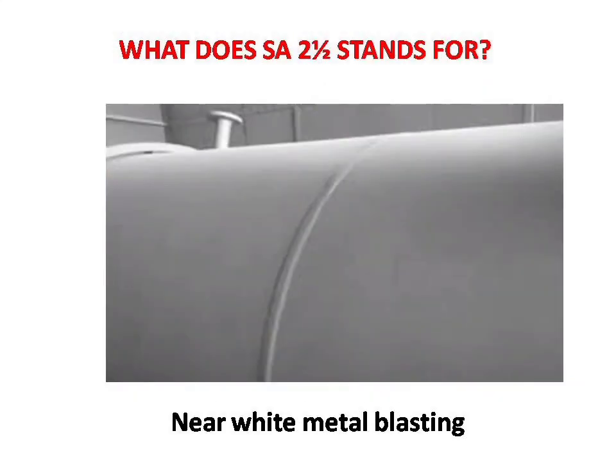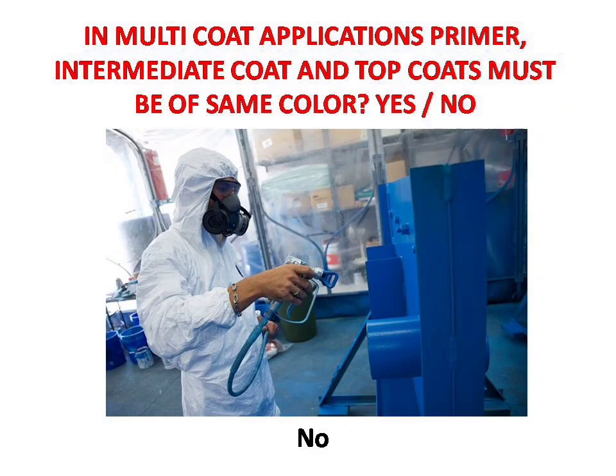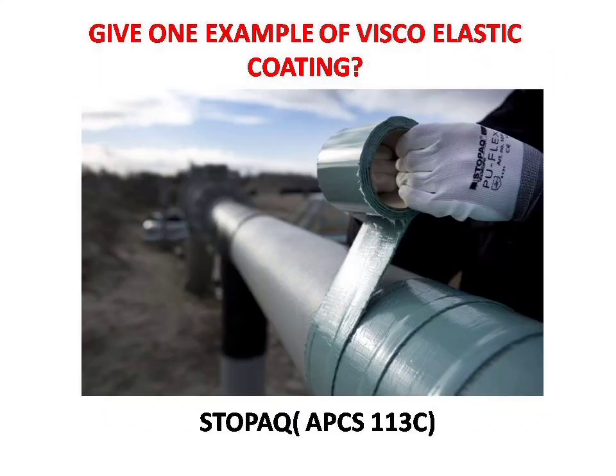Next question: what does SA2 and a half stand for? Answer is: near white metal blasting. Next question: in multi-coat applications, must the primer, intermediate coat and top coats be of the same color? Answer is: no. Next question: give one example of a viscoelastic coating. Answer is: Stopak, APCS-113C.